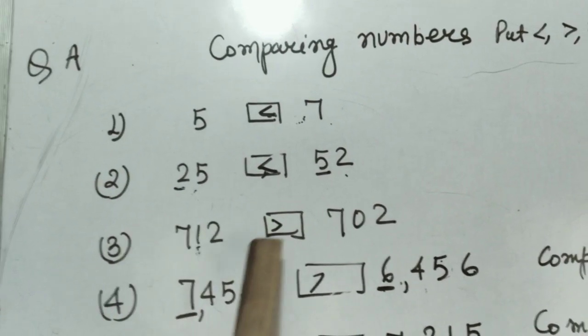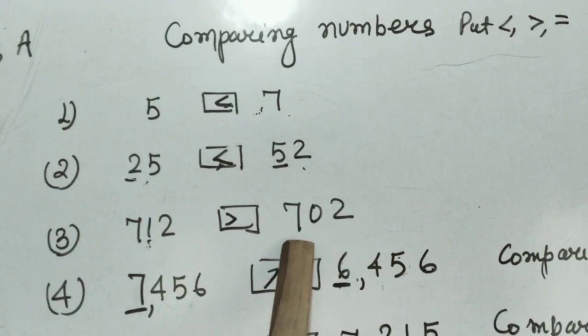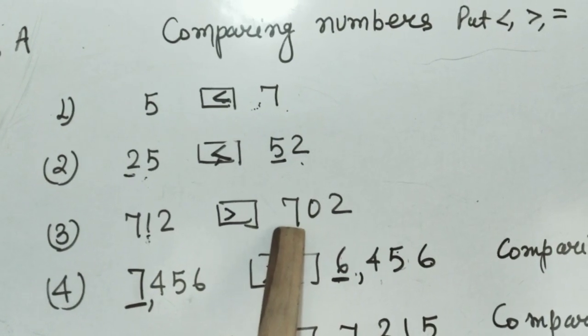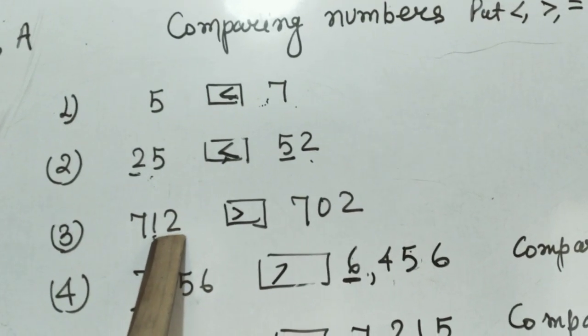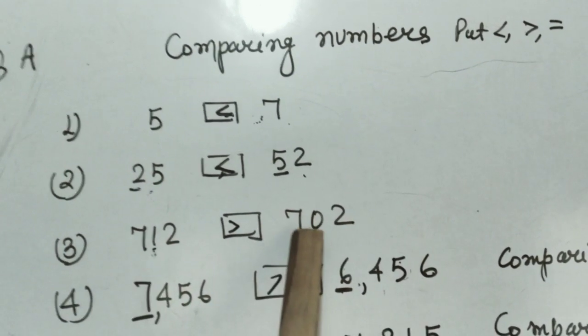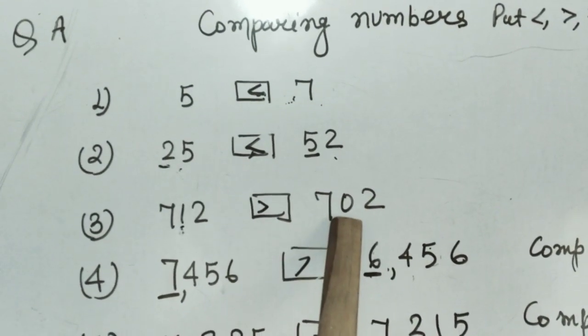Now, it is a 3-digit number: 712 and 702. The 100th place in both cases is the same. So let us compare at the 10th place. At the 10th place, here it is 1, here it is 0. 1 is greater than 0, therefore this one is bigger than this one. This implies 712 is bigger than 702.